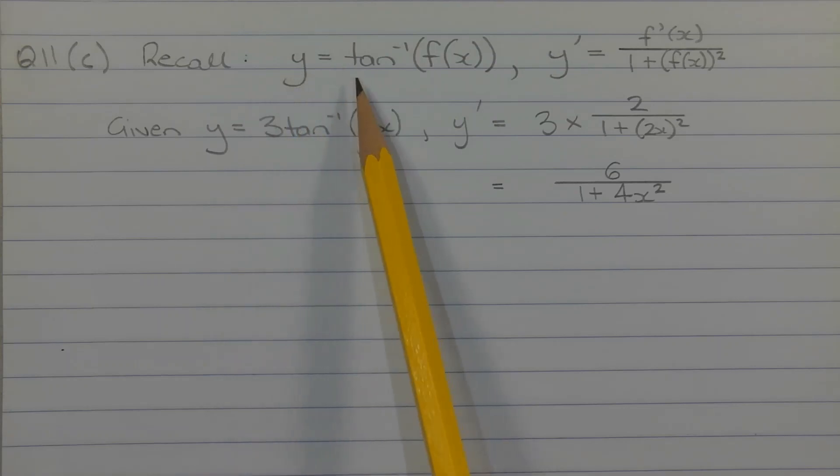Recall that if y is equal to inverse tan or arc tan of f of x, then by the chain rule, the first derivative y dash is equal to f dash of x over 1 plus f of x squared.